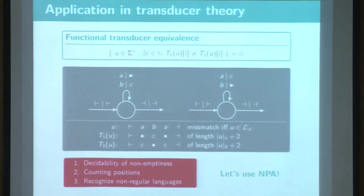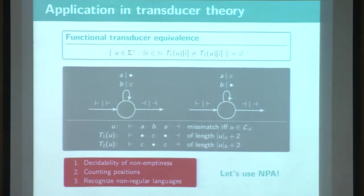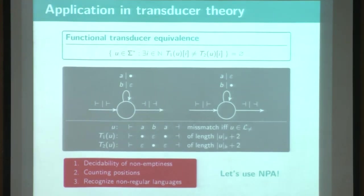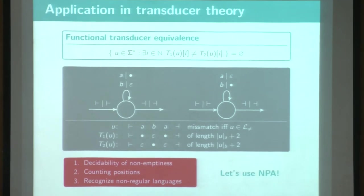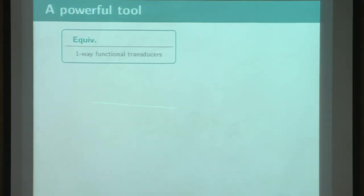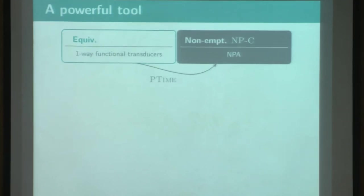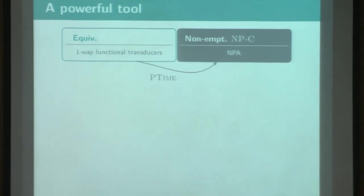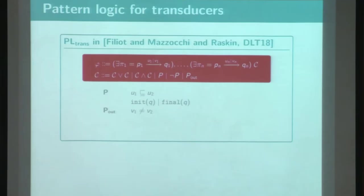So in the end, Parikh Automata seems to have the good ingredient to solve automatically those equivalents problems. And indeed, given two transducers, I can design an algorithm which construct in polynomial time a one-way Parikh Automata, such that you will have an empty language if and only if those two transducers are equivalent. So that gives us those co-NP membership,